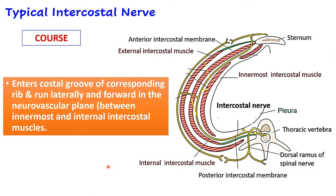Next, the nerve enters the costal groove of the corresponding rib, which is present near the lower border of the rib. It then runs laterally and forward in a neurovascular plane. The neurovascular plane is the space between two muscles: on the outside you have the internal intercostal muscle, and on the deeper or inner aspect you have the innermost intercostal muscle. The neurovascular bundle runs in this space between the internal intercostal and innermost intercostal muscles — this is known as the neurovascular plane.